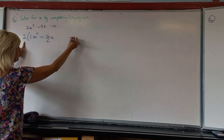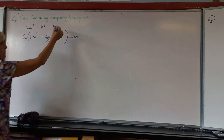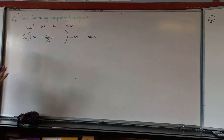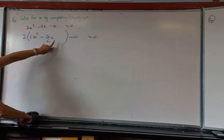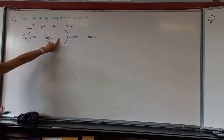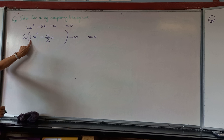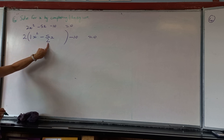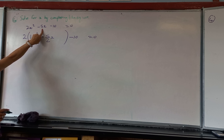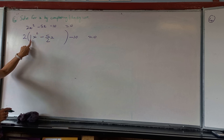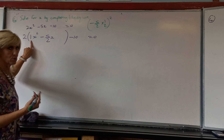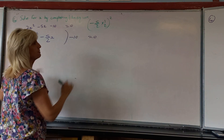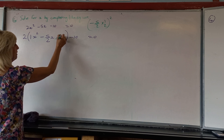Now I need to identify the coefficient of X to use in the technique. Once the bracket has a 1 in front of X squared, the coefficient of X I'm going to use is not negative 5, but negative 5 over 2. So: negative 5 over 2, times a half, and squared — which is always positive because a square is always positive. That answer is 5 over 4, and when squared gives 25 over 16.